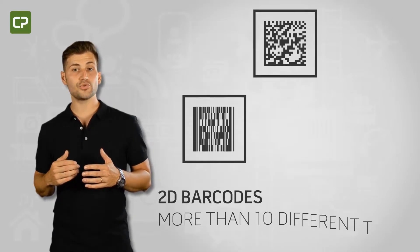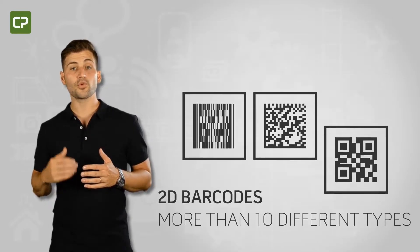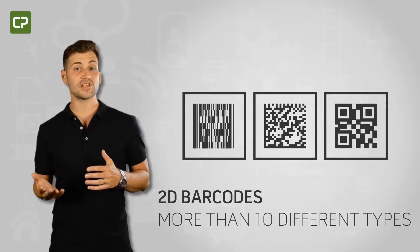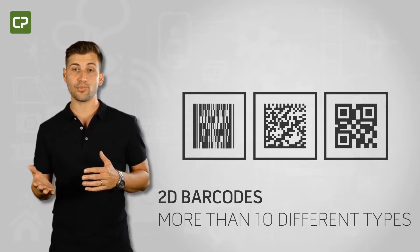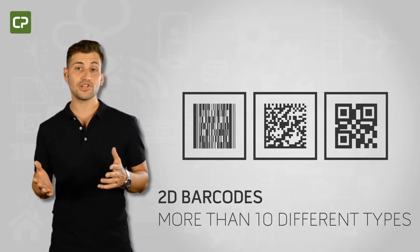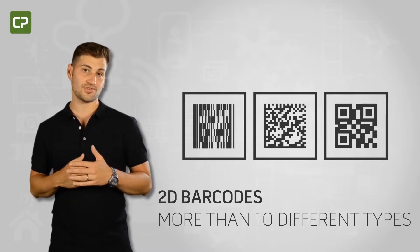XM Edition also allows you to incorporate more than 10 different types of 2D barcodes, which encode more information than traditional 1D barcodes.